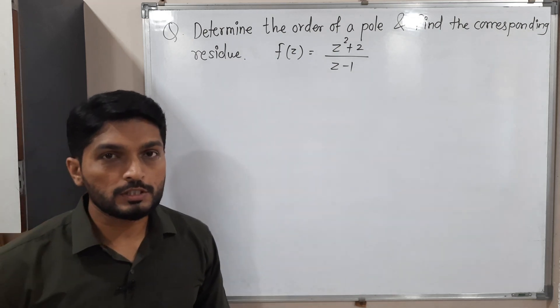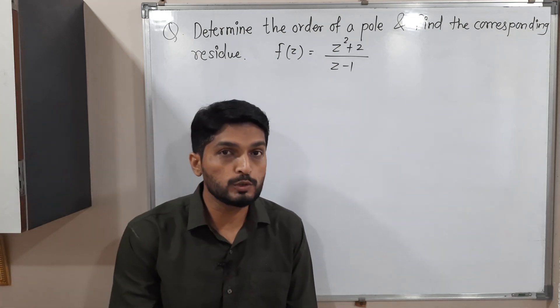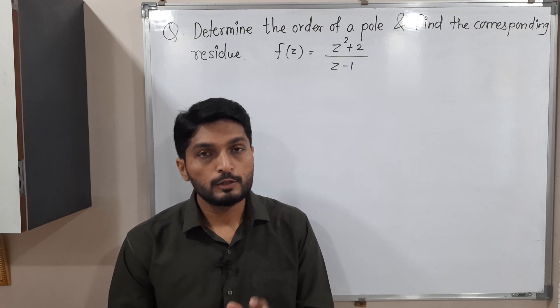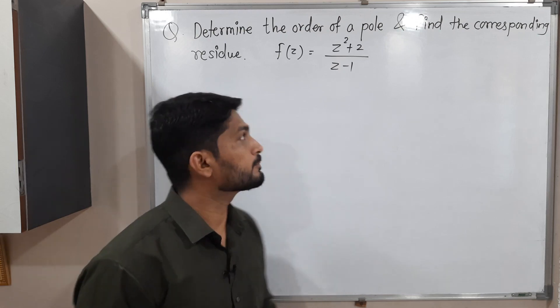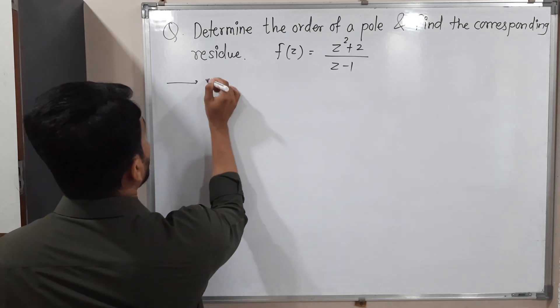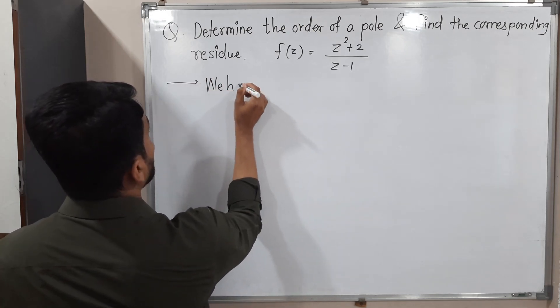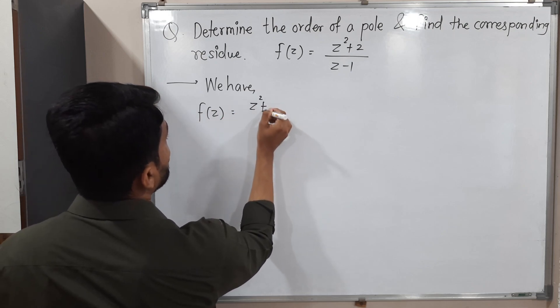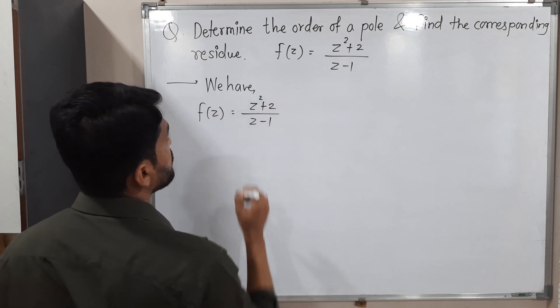So they have given one function to us. They have asked to find its poles with its order and we have to calculate residue also. So let me write the given function first. We have f(z) = (z² + 2)/(z - 1).